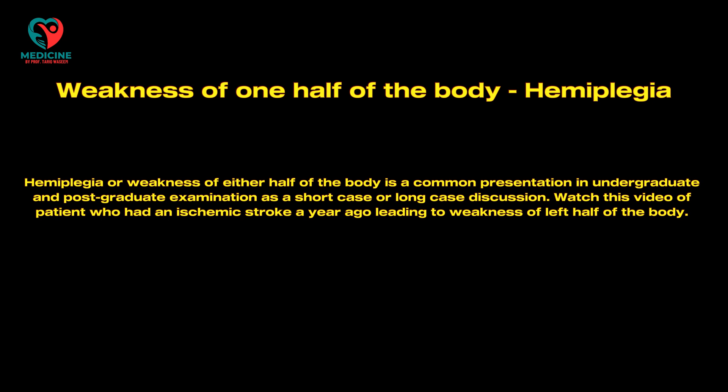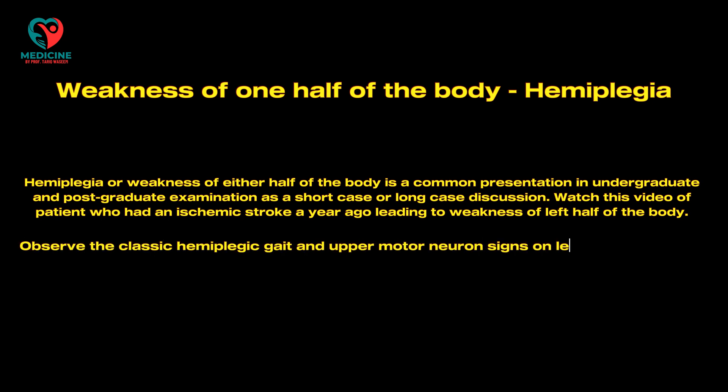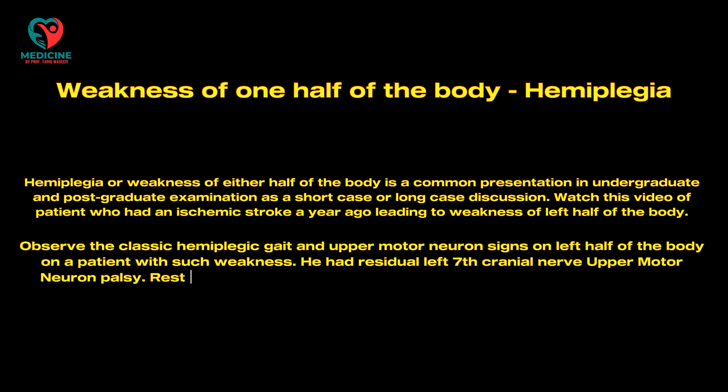Watch this video of a patient who had an ischemic stroke a year ago, leading to weakness of the left half of the body. Observe the classic hemiplegic gait and upper motor neuron signs on the left half of the body in a patient with such weakness.